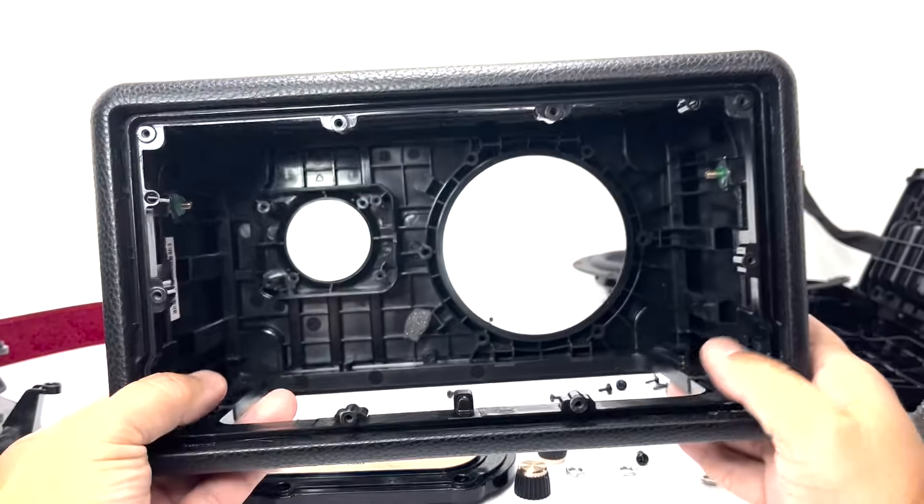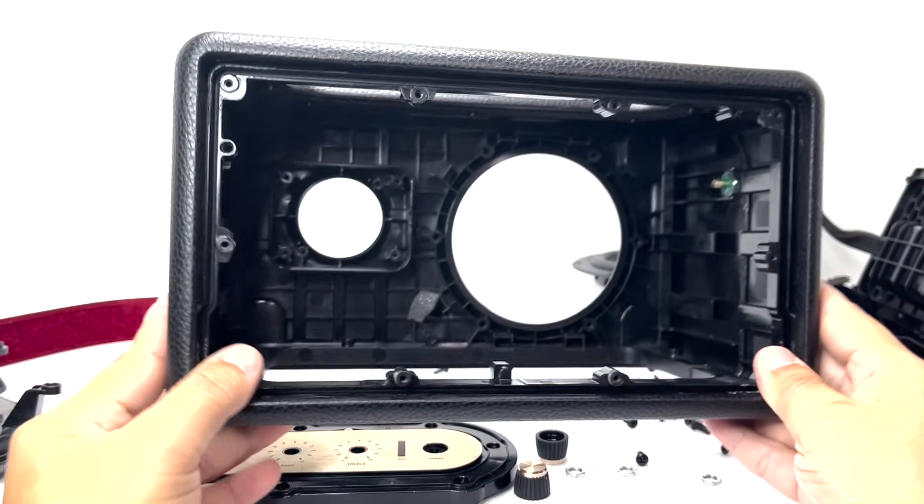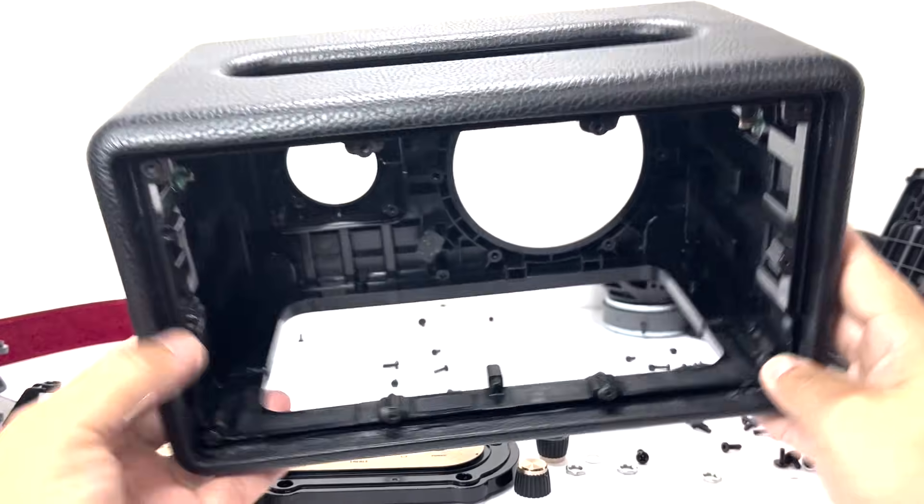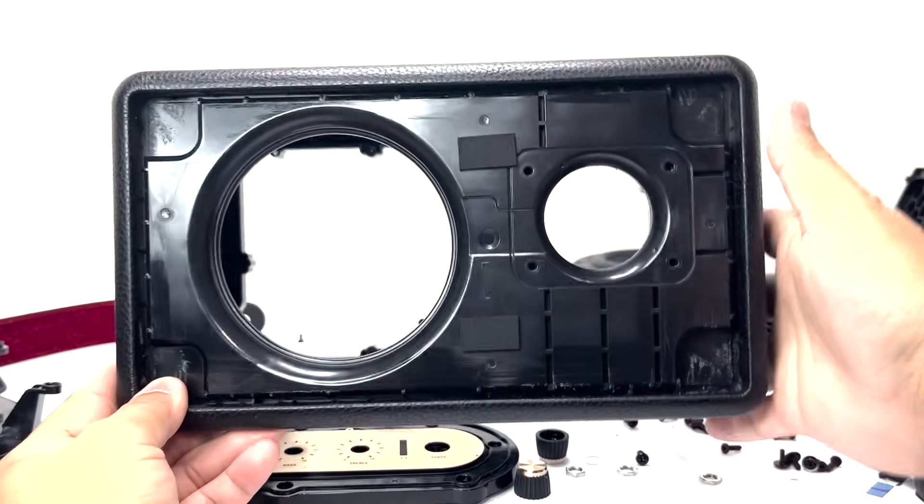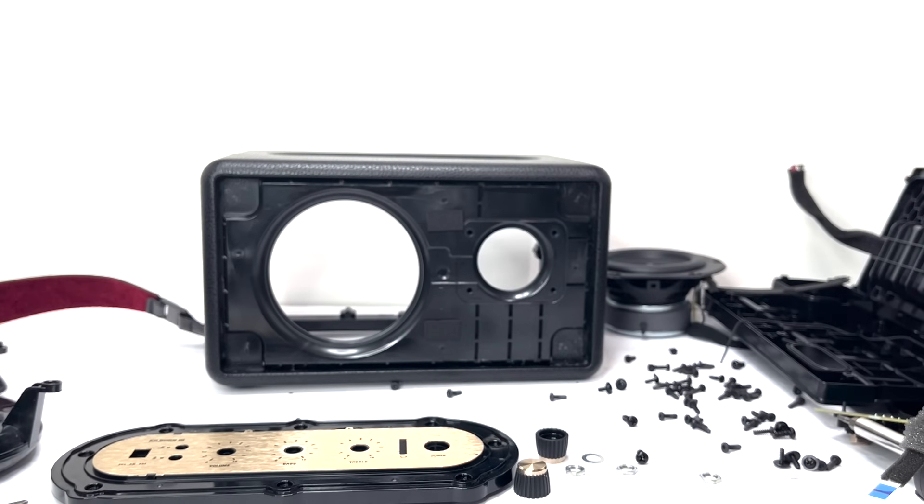With all the components removed, what remains is the bare plastic shell. Wrapped in a durable leather finish and crafted with a thoughtfully designed structure that houses every internal element. This enclosure lets the speaker deliver what Marshall proudly calls true stereophonic 360-degree sound, offering immersive audio that surrounds you from every angle.